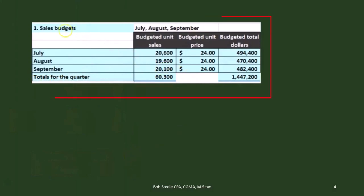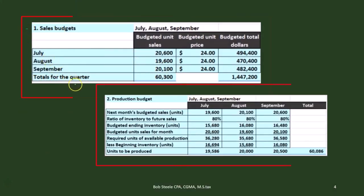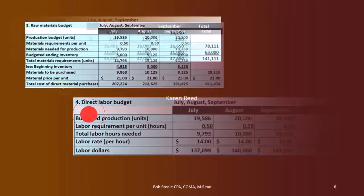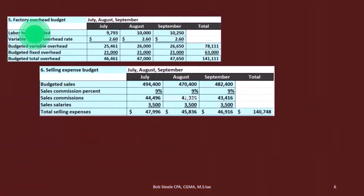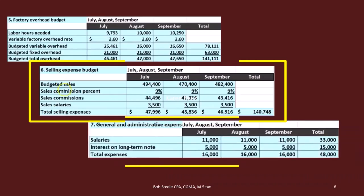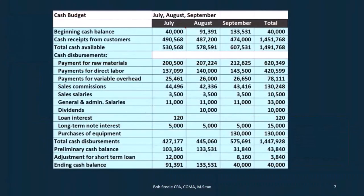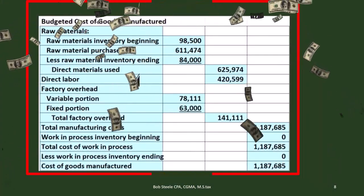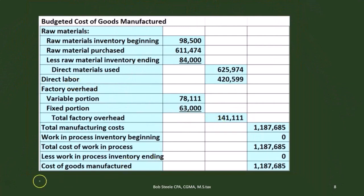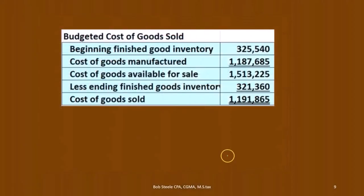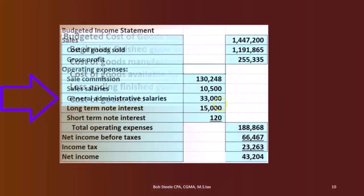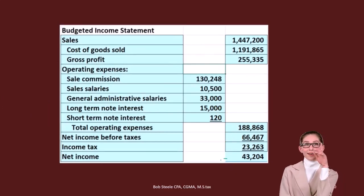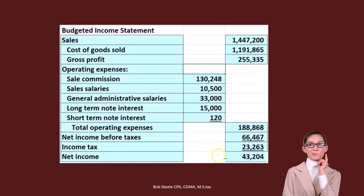So far we've already done the sales budget — that's step one. Step two, we used that to do the production budget. Then we had the raw materials budget, the direct materials budget, and the factory overhead budget, the selling expense budget, and the general and administrative expense budget. We used those to create the cash budget, and then the budgeted cost of goods manufactured to get the cost of goods manufactured number, which we used to calculate cost of goods sold and then the income statement.